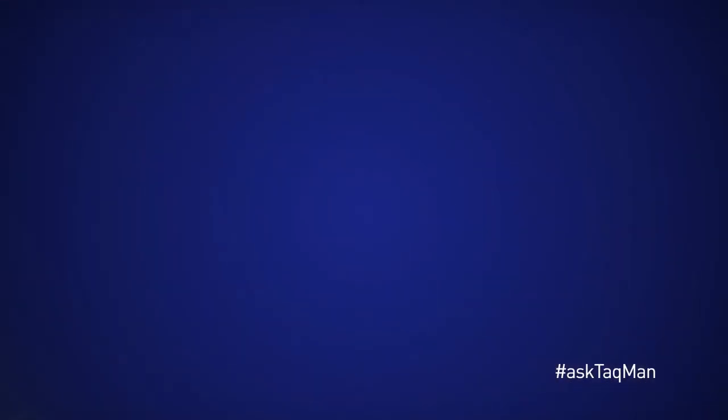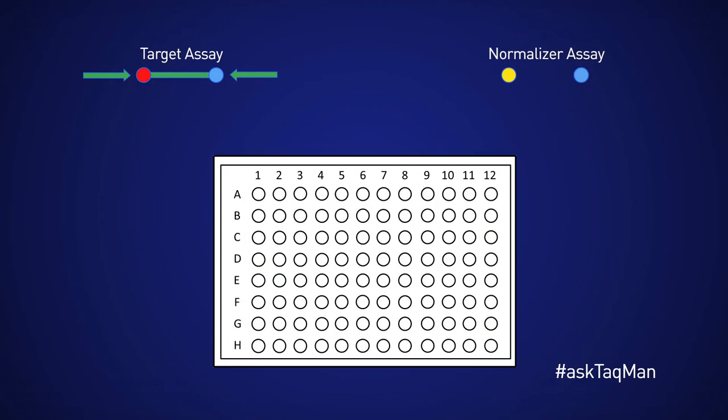Namely, what is the best and most cost-effective way to standardize a multiplex experiment? Let's review some basics. In a single-plex gene expression experiment, I always amplify my target and endogenous control assays in separate wells.